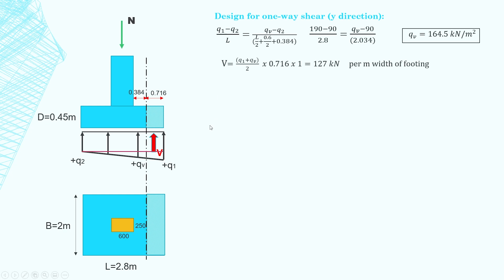Again force is pressure times area. The pressure is the area of the trapezium times 0.716 times one meter width of footing. So the area of the trapezium is Q1 plus QV divided by two and then times 0.716 times one meter that gives us 127 kilonewtons per meter width of footing.